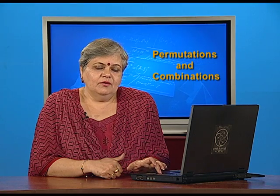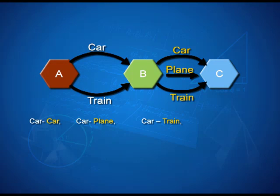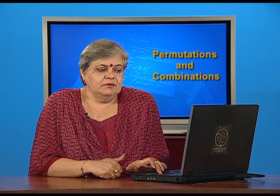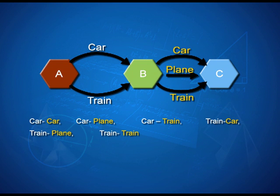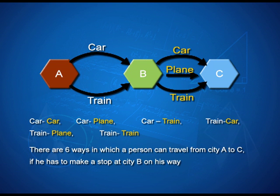It is very obvious that the person has a choice of going from A to B by car and then again taking a car from B to C, or he may go from A to B by car but from B to C choose to go by air or by train. So there are already 3 ways, and similarly 3 more possibilities arise if he goes from A to B by train and then chooses either car, plane, or train. In other words, there are 6 different ways in which the person can travel from city A to city C if he makes a stop at city B on his way.